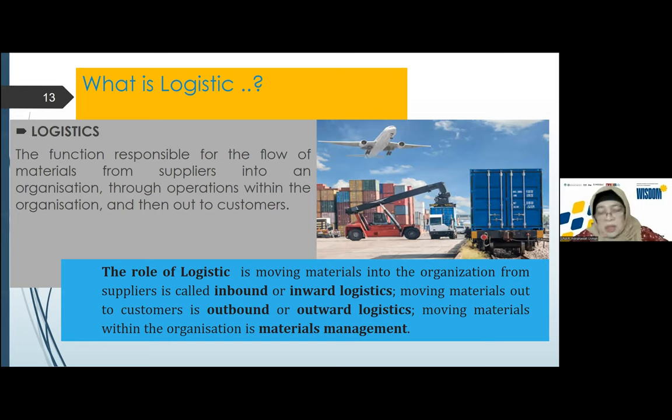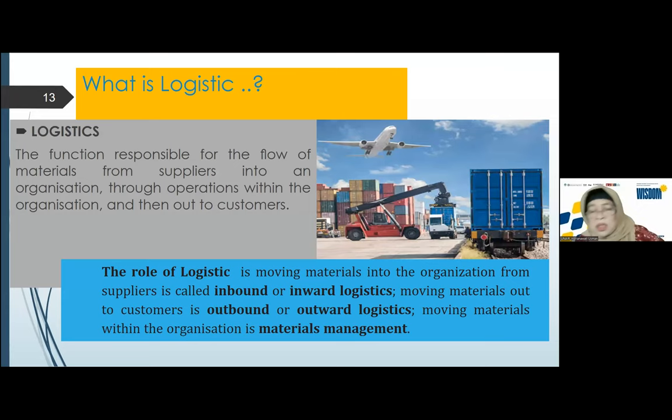The role of logistics is: moving material into the organization from supplier is called inbound or inward logistics. Moving material out to the customer is outbound logistics, also called outward logistics. Moving material within the organization is material management. Before coming to the company, it is called inbound logistics. Inside the manufacturing, we call it material management.